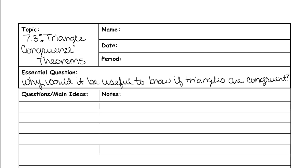First, you need to understand what congruent means. Whenever you have two congruent triangles, it means that both sets of their sides are congruent to each other, and both sets of their angles are all congruent to each other. So they must be completely the same — one cannot be bigger or smaller than the other, they have to be exactly the same. The second one could be rotated, translated, or reflected, but it just cannot be dilated. It can't be bigger or smaller; it has to be the exact same.